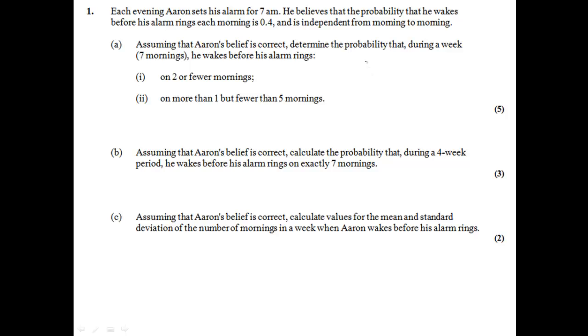So the first thing we do is we write our X which is a discrete random variable is distributed, and with discrete random variables we'll be looking at a binomial distribution. We can see this from the rest of the question. We only have two outcomes success or failure and we have seven days of the week. So N our number of trials is seven and our probability of success is 0.4. That's the probability that he wakes before his alarm. So there's our distribution: discrete random variable X is distributed binomially with N equal to 7 and P equal to 0.4.